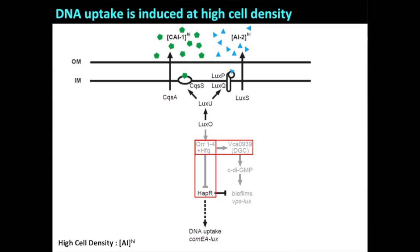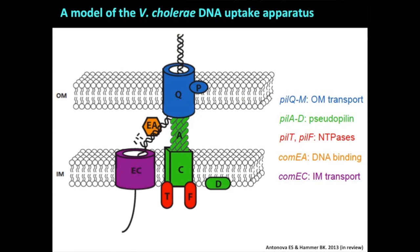Many bacteria take up extracellular DNA from their environment by building this complex machine that spans the inner and outer membrane. Through the outer membrane transporter, double-stranded DNA is taken up into the cell. This green part acts as a piston that extends and grabs the DNA. Double-stranded DNA enters the periplasm, it's bound by a DNA binding protein, one strand gets degraded, and the other strand — the single strand — enters into the cytoplasm.